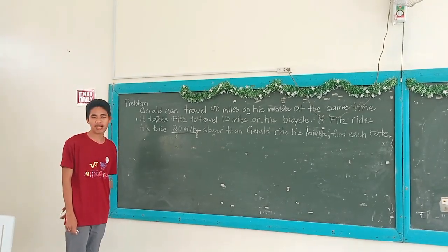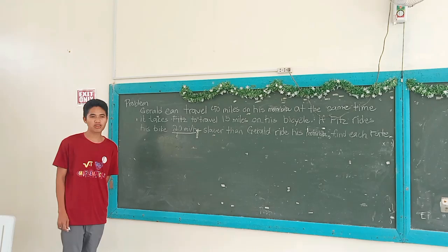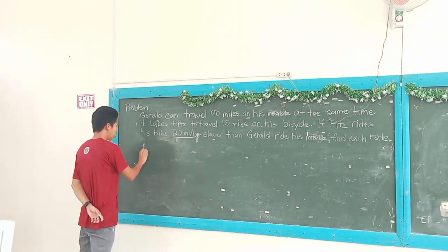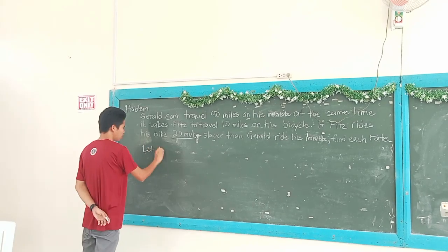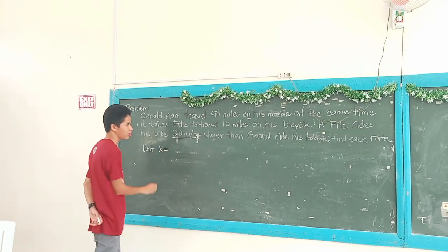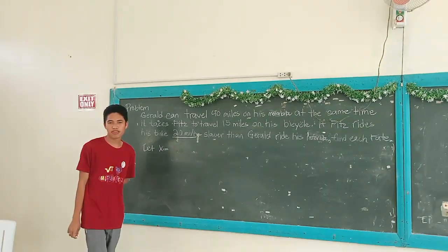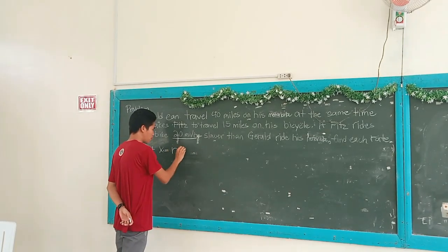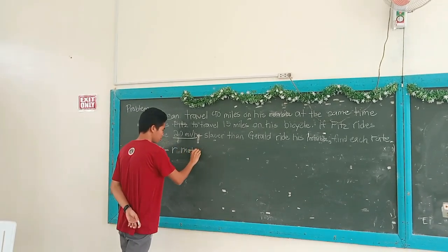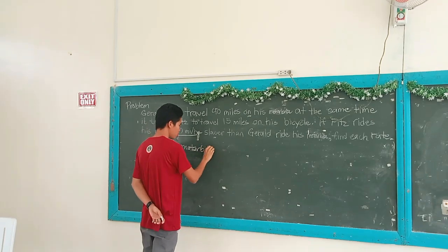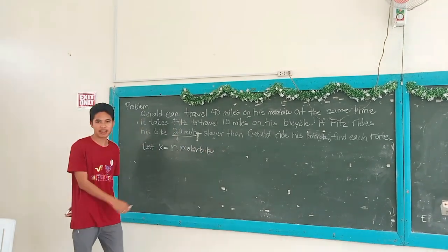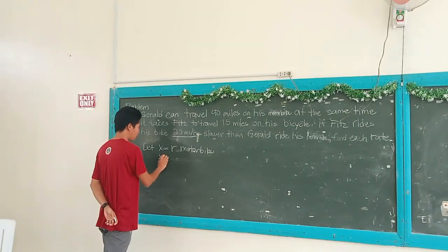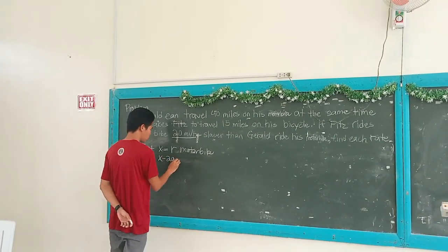The first step in solving a problem involving a rational algebraic expression is to represent the unknown. So in representing the unknown, let x be equal to the rate of the motorbike, and x minus 20 is equal to the rate of the bicycle.